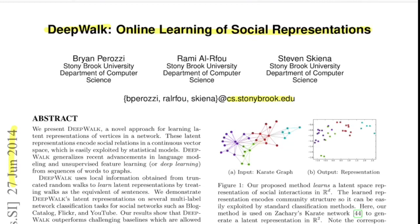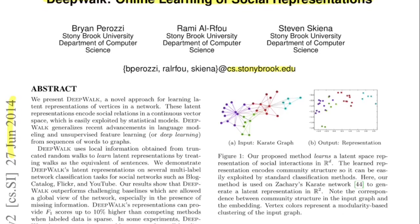Now let's dive in and see the paper. We present DeepWalk, a novel approach for learning latent representation of vertices in a network. These latent representations encode social relations in a continuous vector space, which is easily exploited by statistical models. DeepWalk leverages recent advances in language modeling and unsupervised feature learning from sequences of words to graphs.